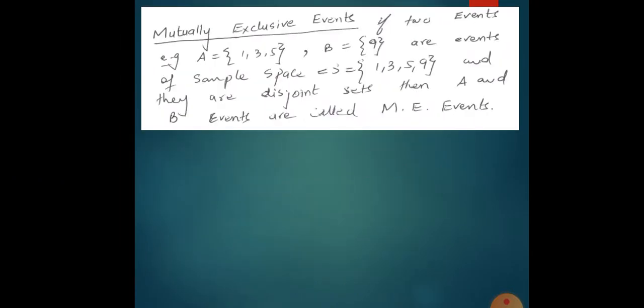Next are mutually exclusive events. Mutually exclusive events are those events of a sample space that are disjoint sets. For example, the sample space is {1, 3, 5, 9}. Event A contains {1, 3, 5} and event B contains {9}. Both these sets are disjoint — they do not have any common elements. So these two events are called mutually exclusive events of that sample space.